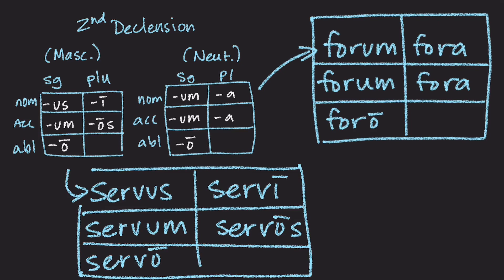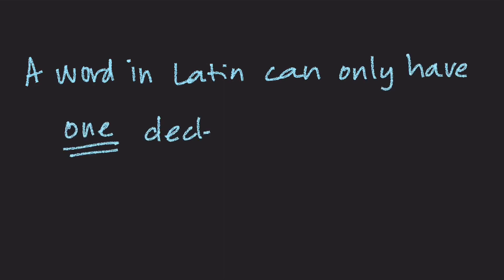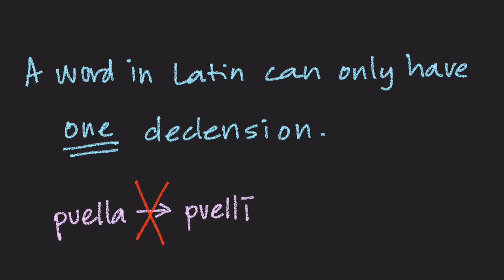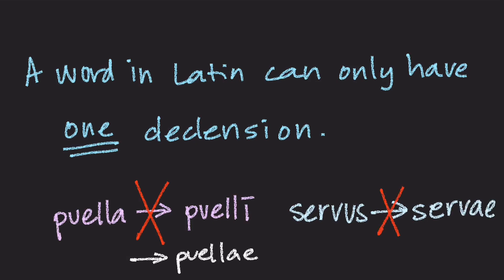Again, the difference between the nominative and accusative neuter has to be determined through the function that word has in the sentence. A word in Latin can only have one declension. This means that a first declension word will always be in the first declension. So Puella can never change to Puelli, because that long I is a second declension ending — it will always change to Puellai in the nominative plural. Similarly, words like Serwus can never change to Serwai, because that A-E is a nominative plural ending of only the first declension. That means Serwus can only change to Serwi.